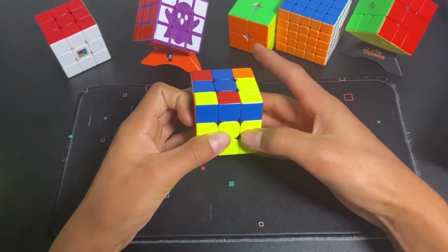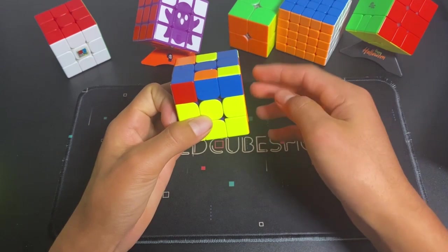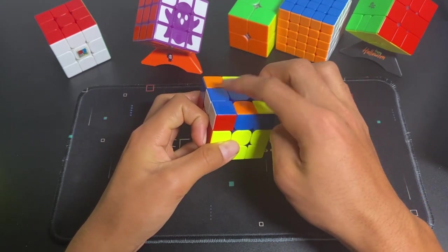So this is just the basic insert. This is a sledge. And that can reorient the edges on the top.